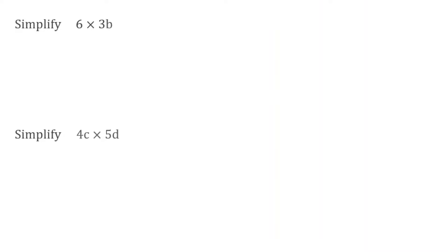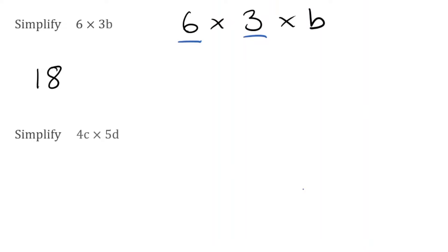Now we're going to take a look at some multiplication questions. For this first one, I have 6 multiplied by 3b. Writing that out further, 6 multiplied by 3b actually means 6 multiplied by 3 multiplied by b. We can see we have our number terms and our letter terms. Let's combine the numbers first: 6 multiplied by 3 is 18. Then at the end we've got our term of b, so we're multiplying by b. The final answer would be 18b.